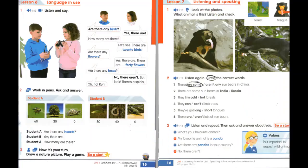Track 1.12. Unit 1, Lesson 6, Activity 1. Are there any birds? Yes, there are. How many are there? Let's see. There are 1, 2, 3, 4... 20 birds. Are there any flowers?